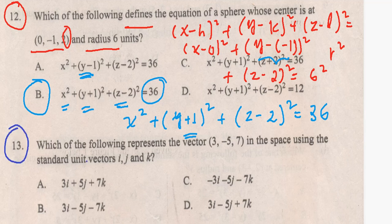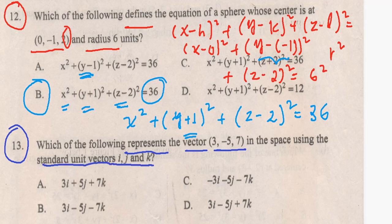Question number 13: which one of the following represents the vector (3, -5, 7) in space using the standard unit vectors i, j, k? In space, a vector is represented as x times i plus y times j plus z times k.